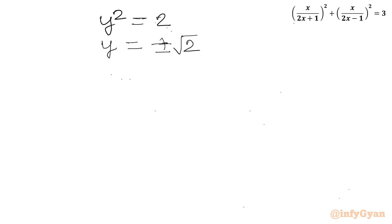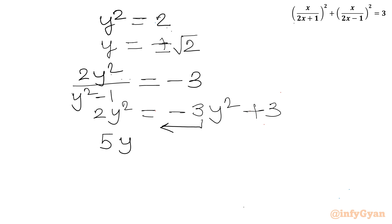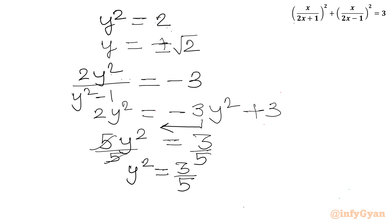Now let us solve the second solution set. Setting 2y squared over (y squared minus 1) equal to minus 3 and cross-multiplying: 2y squared equals minus 3(y squared minus 1), so 2y squared equals minus 3y squared plus 3. Taking minus 3y squared to the left-hand side: 5y squared equal to 3, so y squared equals 3 over 5. Taking the square root: y equals plus or minus square root of 3 over 5.